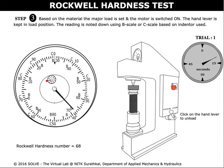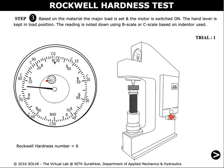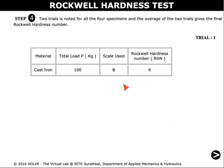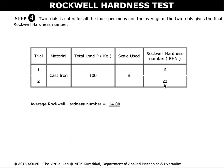The reading is noted down using the B or C scale depending on the material chosen. Now click on the lever to the unload position. The Rockwell hardness number is noted. These are the observations for trial 1. The average Rockwell hardness number can be found.